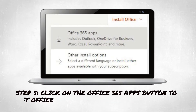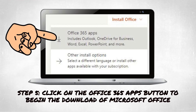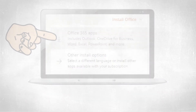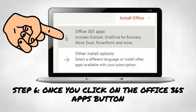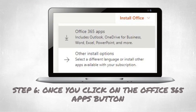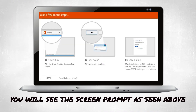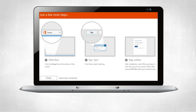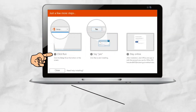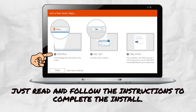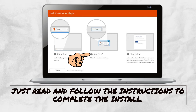Step 5: click on the Office 365 Apps button to begin the download of Microsoft Office. Step 6: once you click on the Office 365 Apps button, you will see the screen prompt as seen above. Just read and follow the instructions to complete the install.